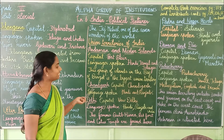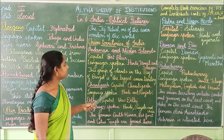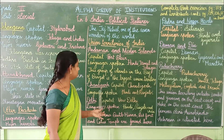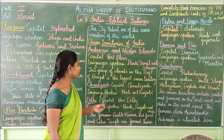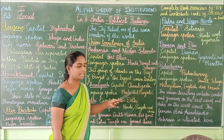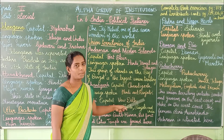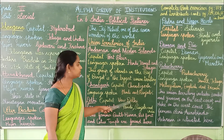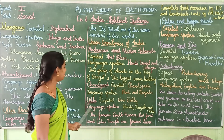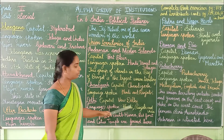The next union territory is Chandigarh. Its capital is also Chandigarh. The languages spoken are Hindi and Punjabi. Next is Delhi, with its capital New Delhi.